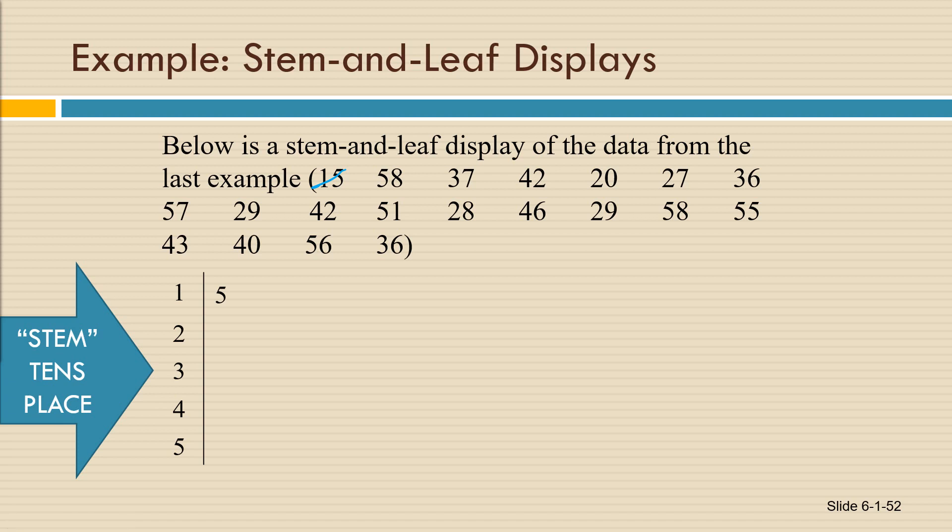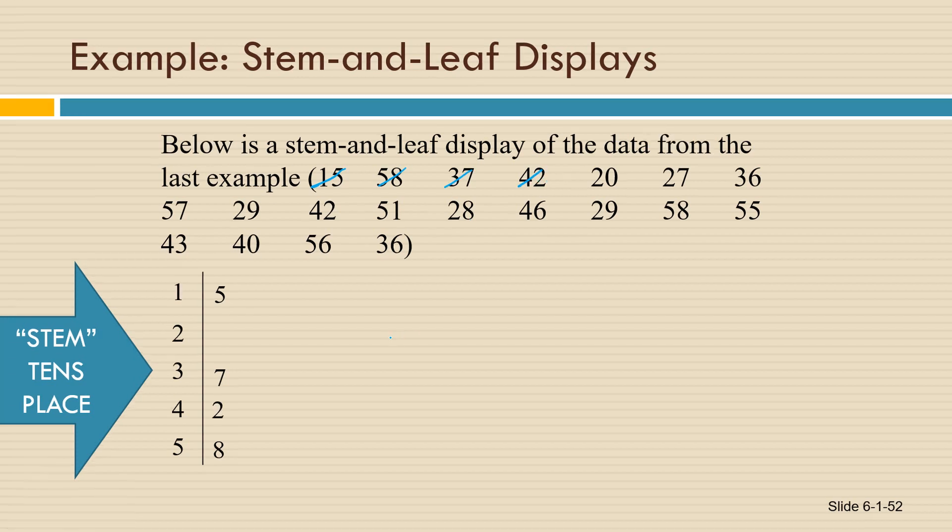The next number is 58, and that gives us an 8 next to the 5. The next number is 37, so we place a 7 next to the 3. The next number is 42, so we place a 2 next to the 4.